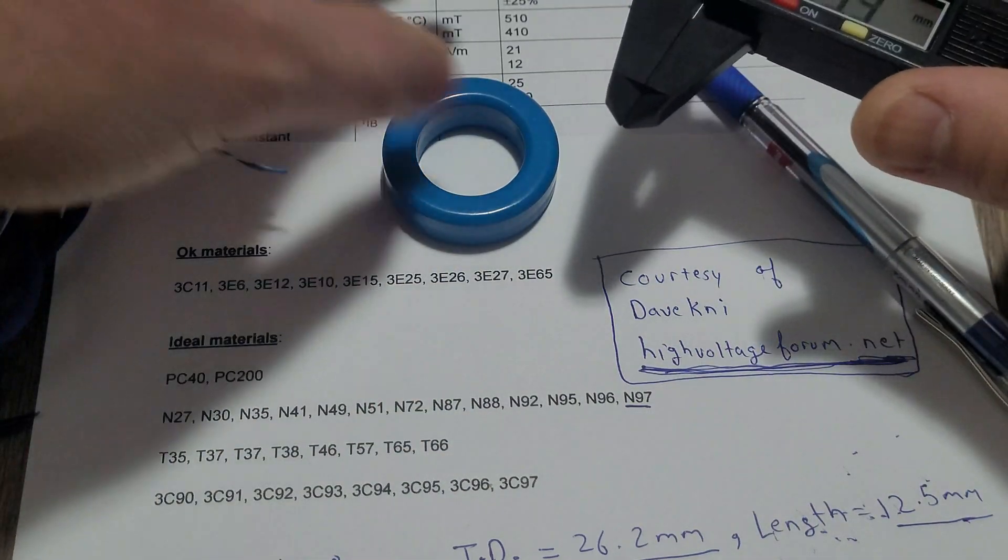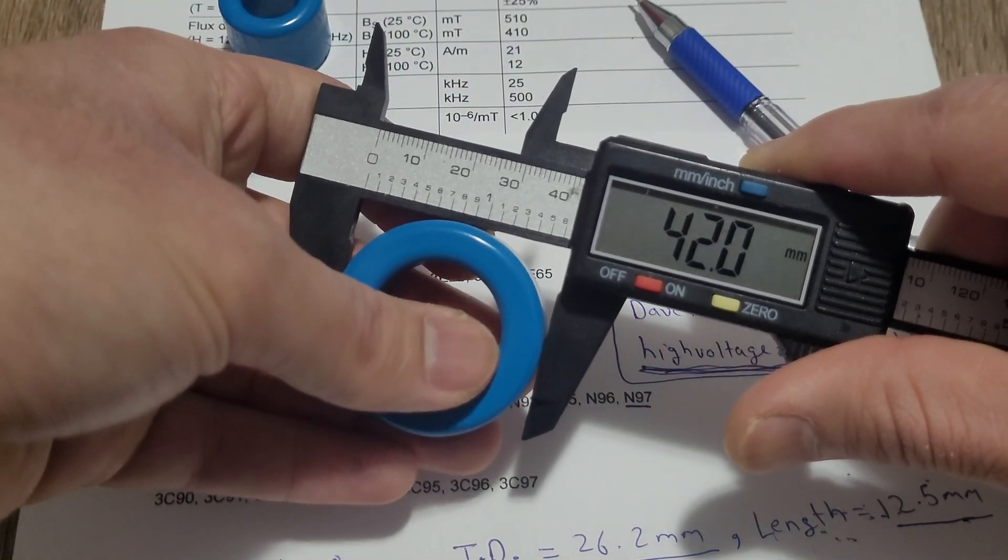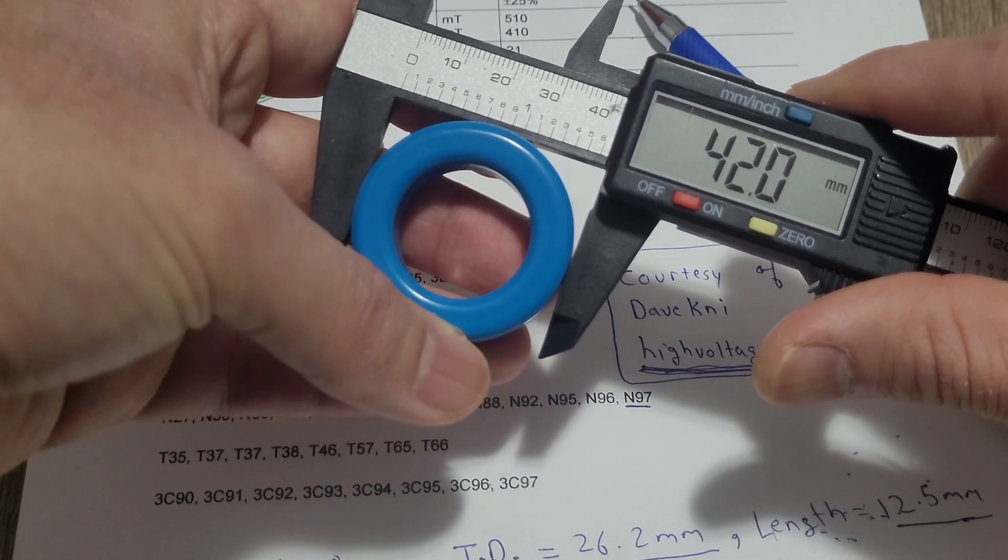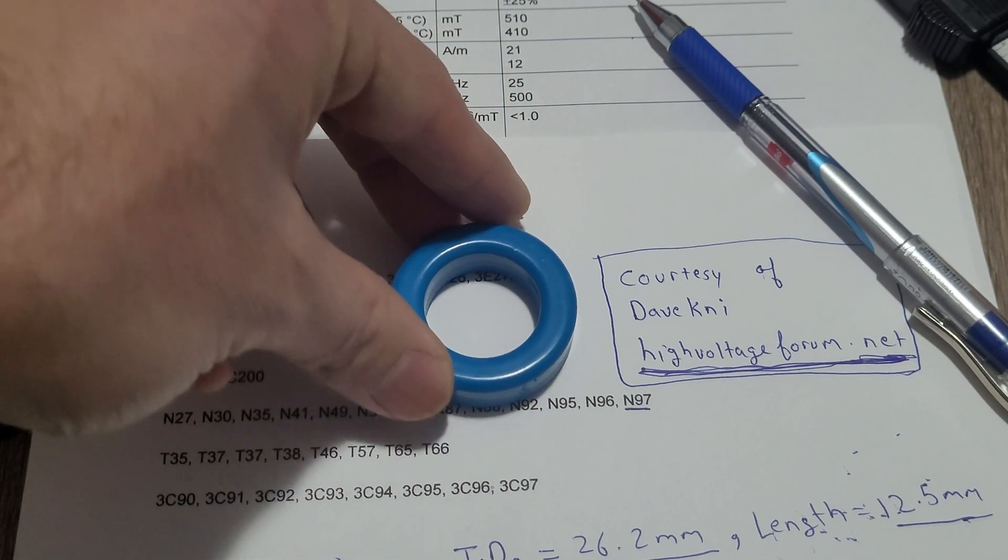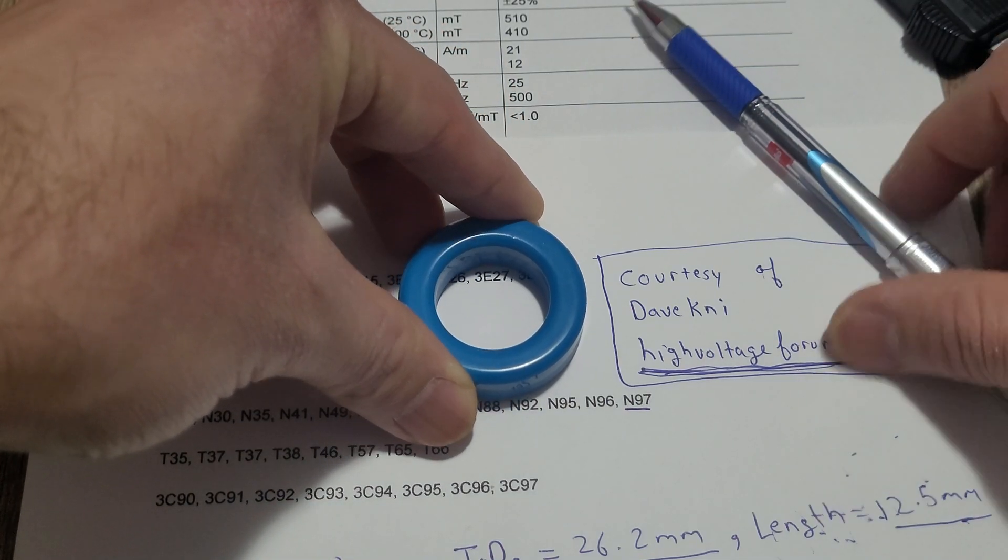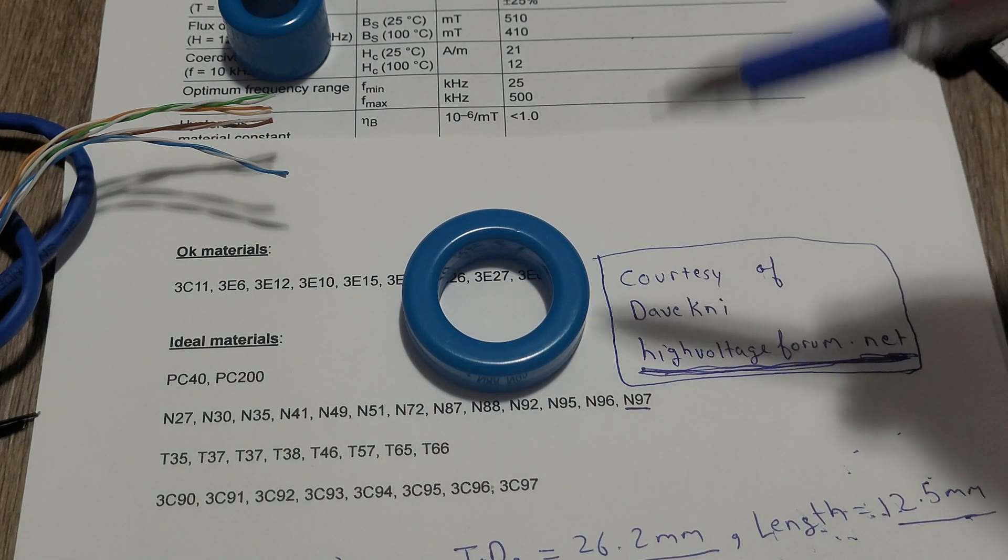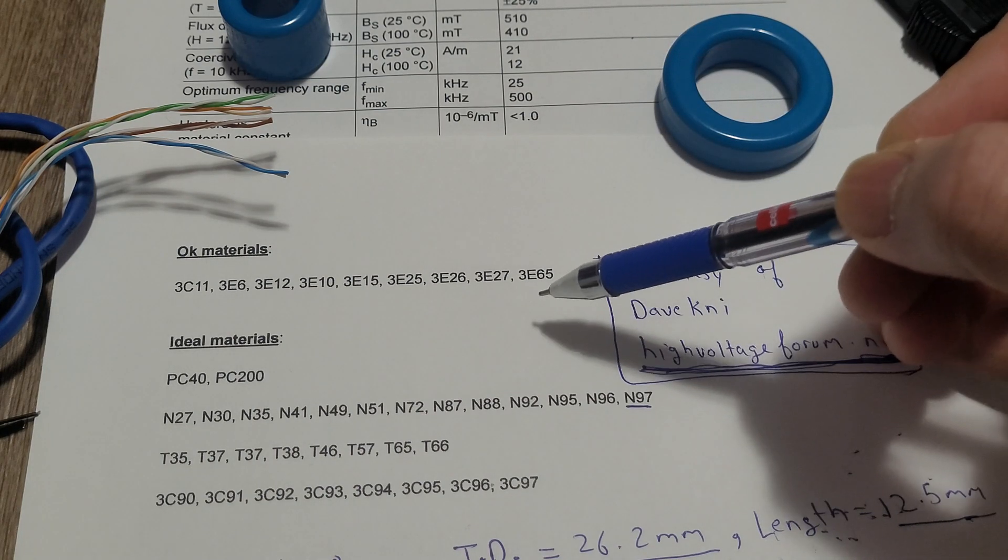If you are using multiple IGBTs in parallel for H bridge, you might even need a bigger core than this. But with this size core I was able to drive my 8 IGBT full H bridge easily. So first decide what kind of material that you want to use. I will be using an N97 toroid core.